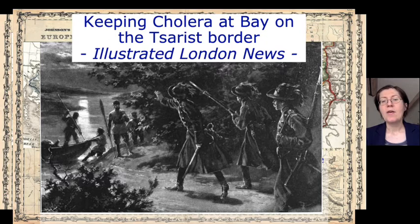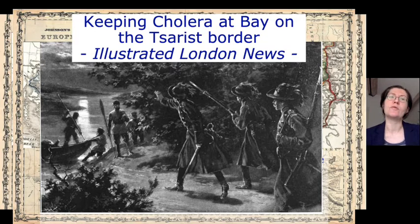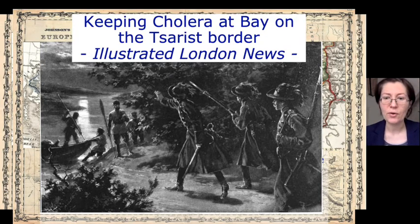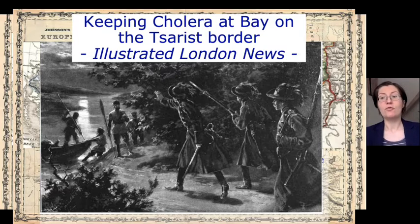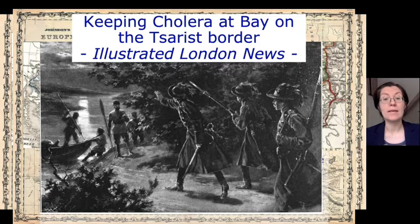Now, as states became increasingly centralized and the dynastic principle of domination was replaced by a geopolitical territorial one, and nation states gradually began to emerge, borders clarified and became less porous.